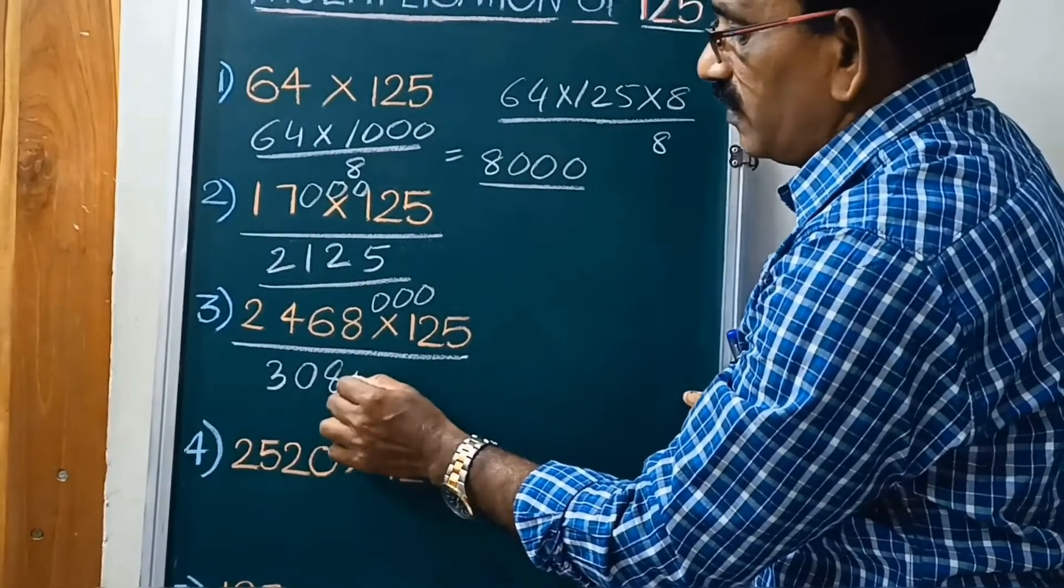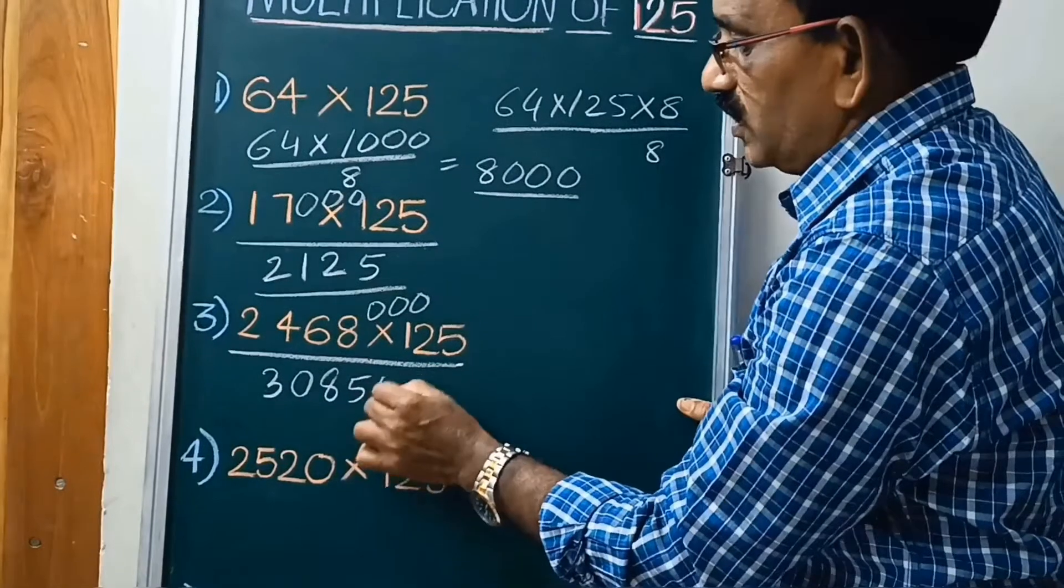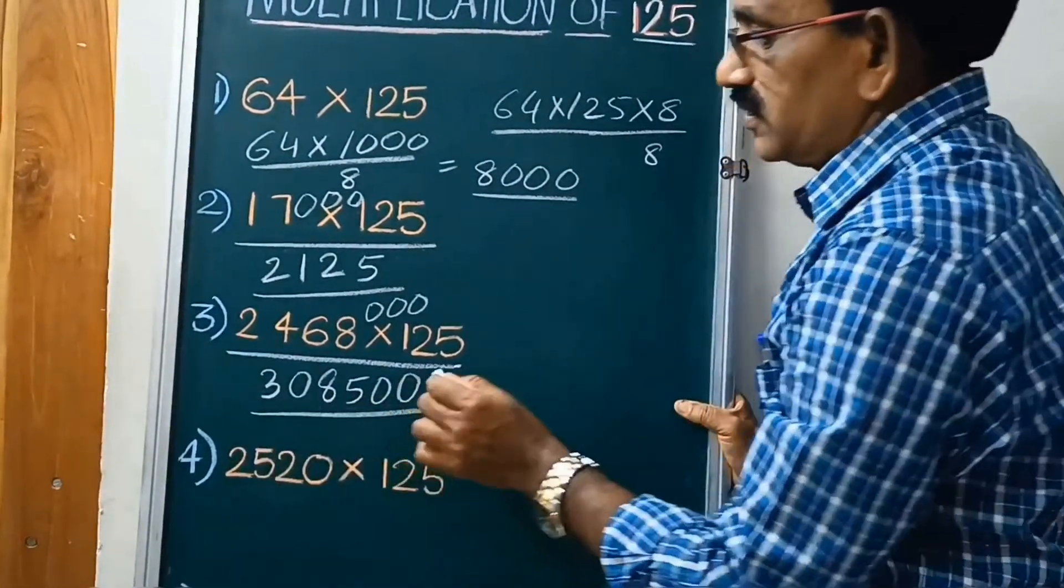8 sixes are, 8 fours are, remainder 4. 8 fives are 40, put it 3 zeros. This is the answer.